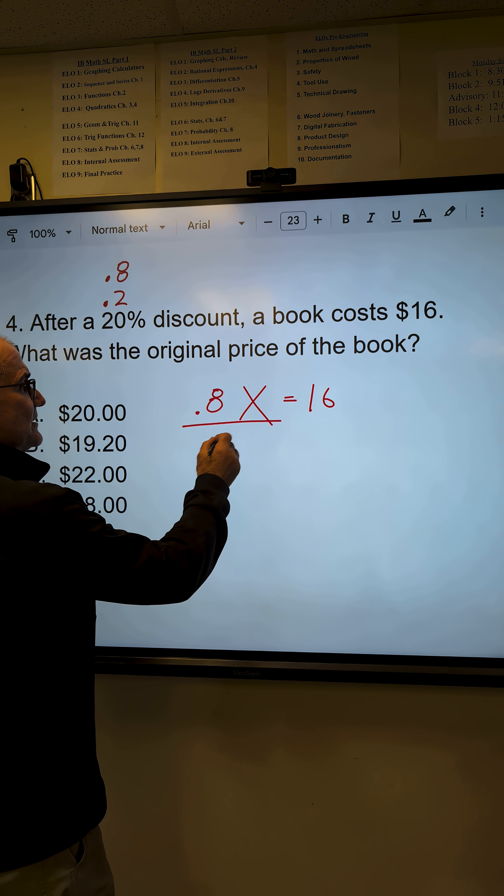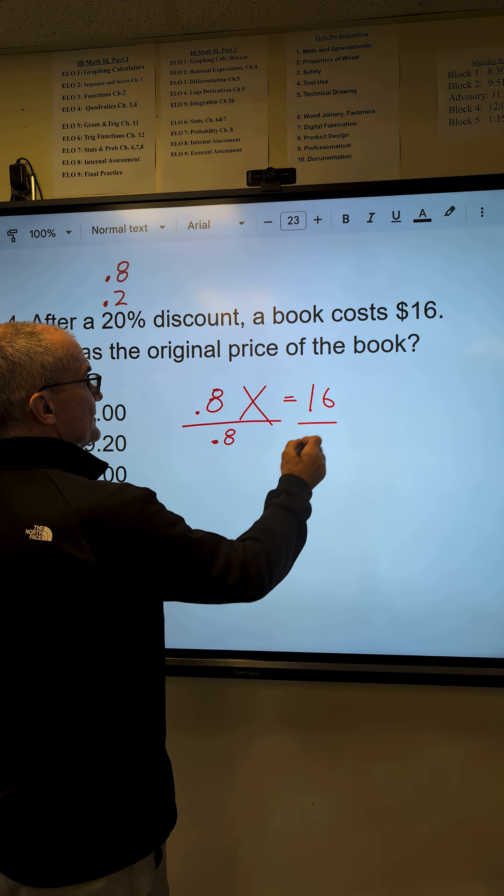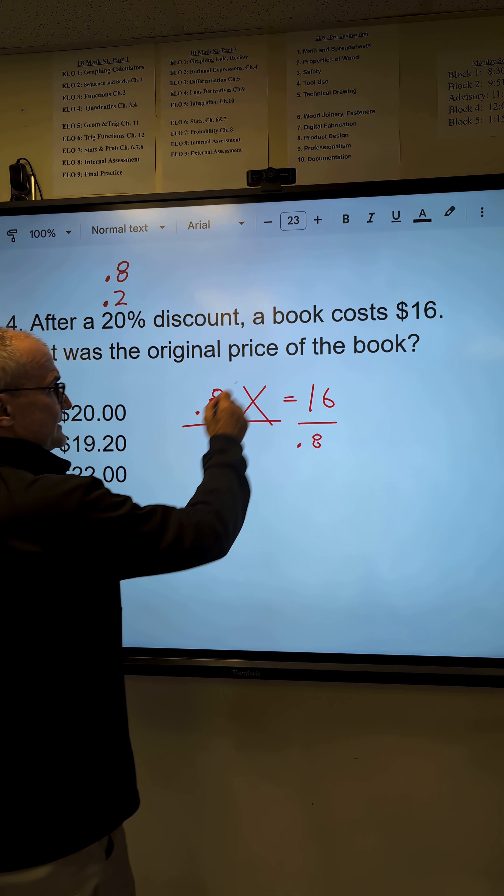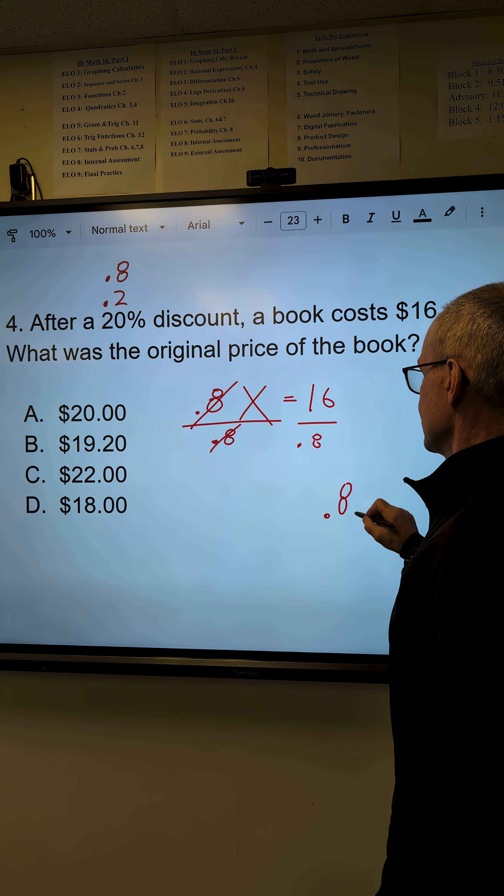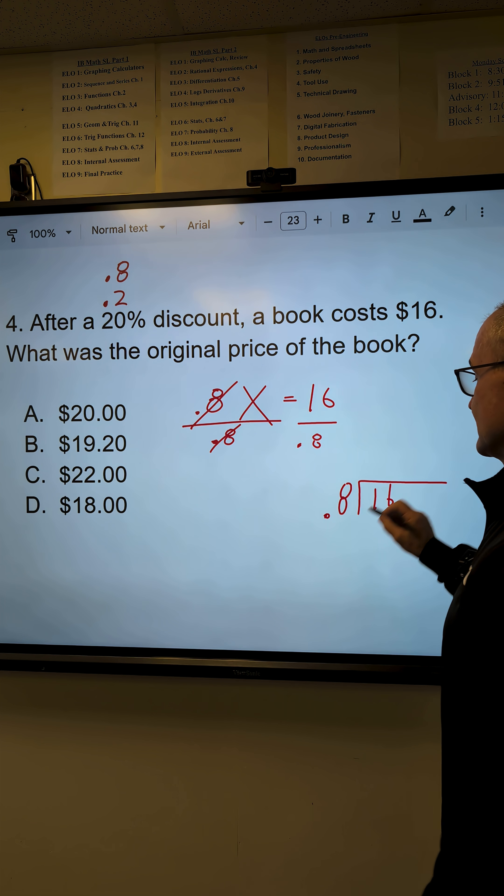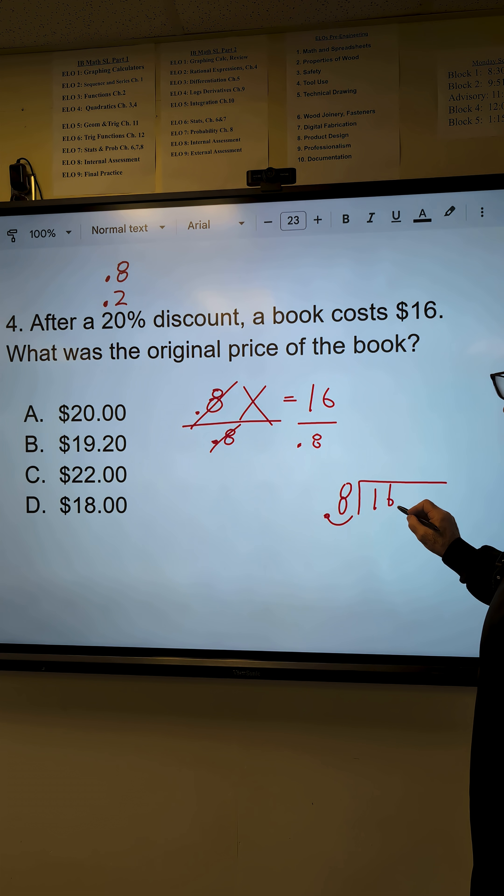Or algebraically, I'm going to solve this by dividing both sides by .8. That's going to give me x by itself. .8 into 16. I'm going to move that decimal over 1. So I move it over here 1 to give me 160. 8 into 16, twice. The zero is there.